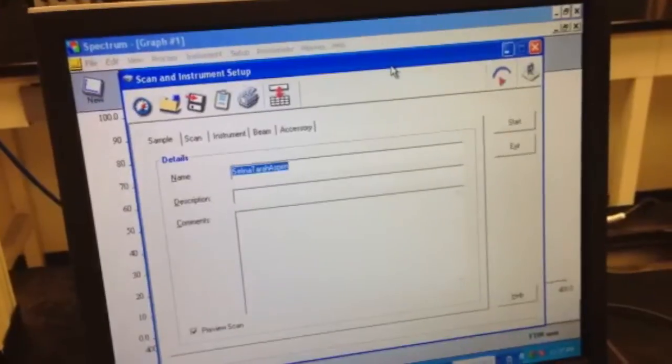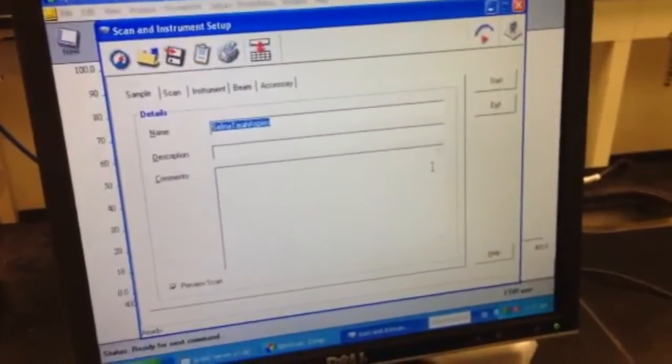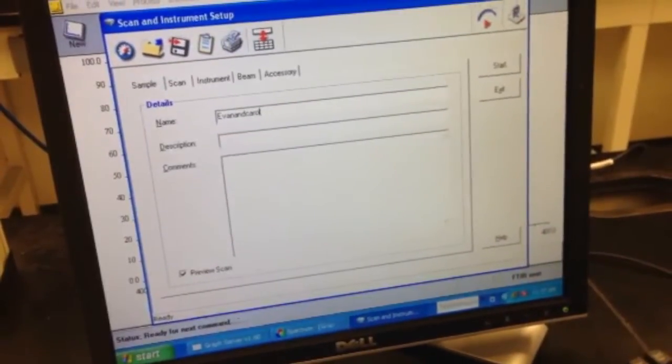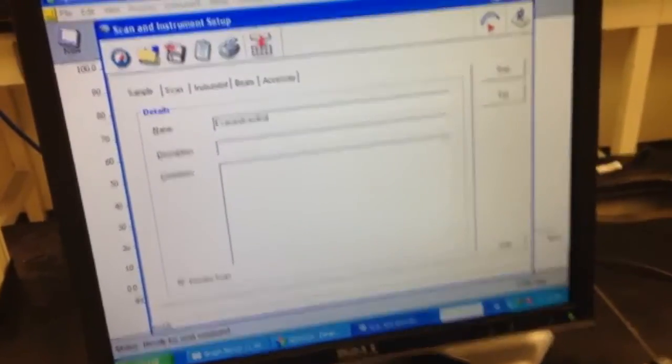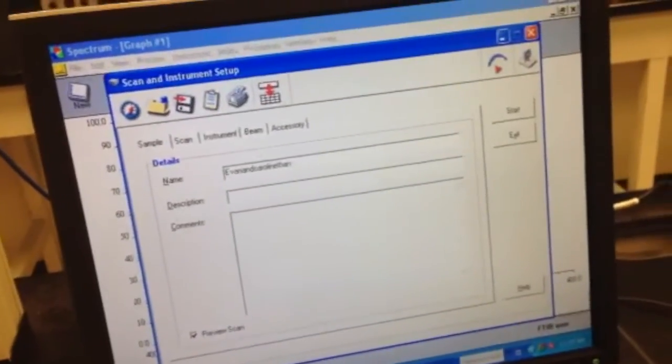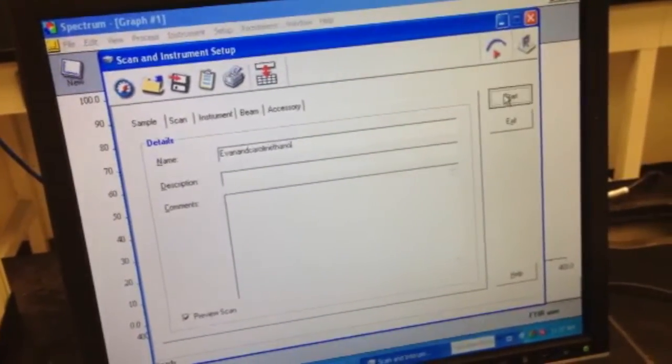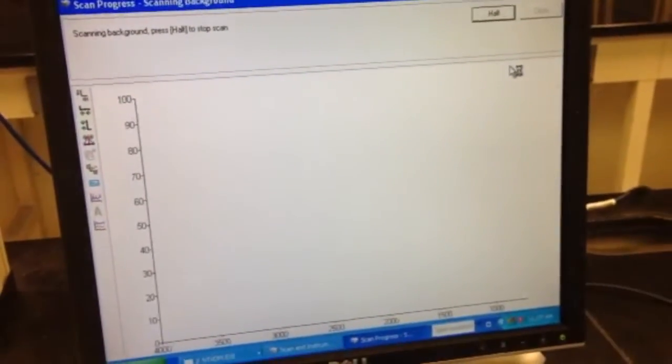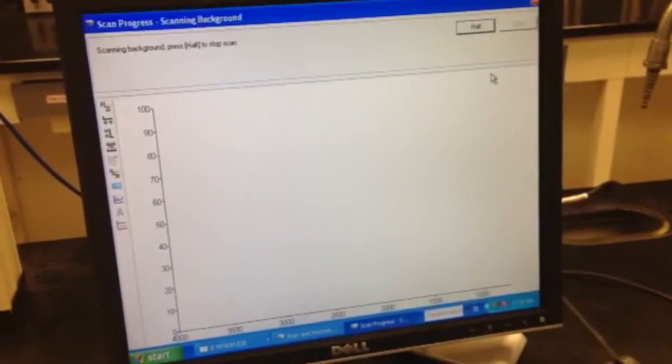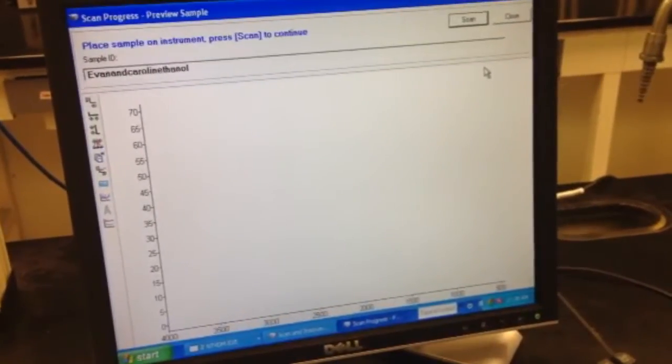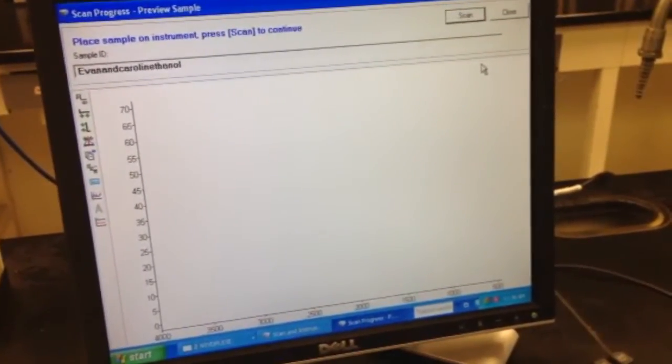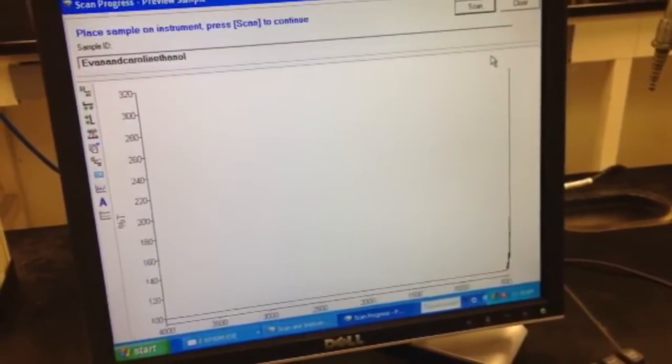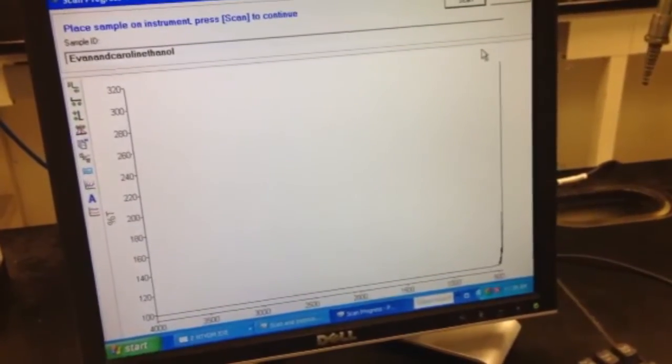The next step is to do a baseline scan. You're going to click scan in the top right corner. Under name, you're going to type the name of whatever lab activity you're doing, and then click start. What you're doing here is essentially zeroing the machine and providing it with a baseline. It's accounting for any impurities that might be on your disks that you weren't able to get off, and it's going to know exactly what kinds of new chemicals you put on the disk to be analyzed.